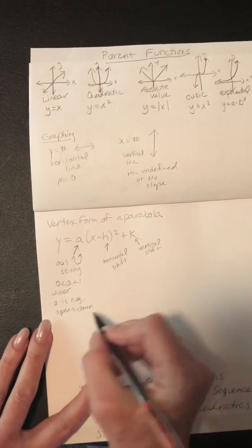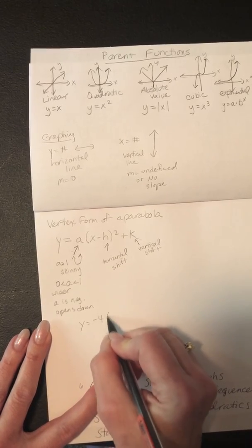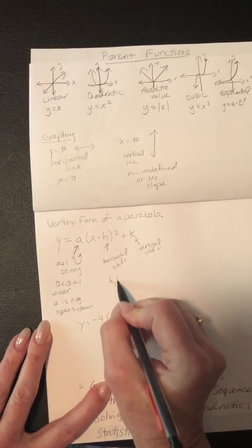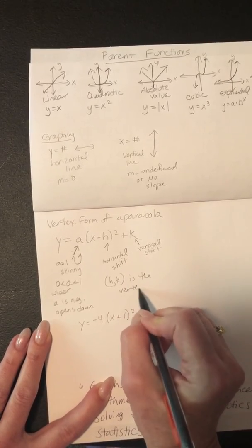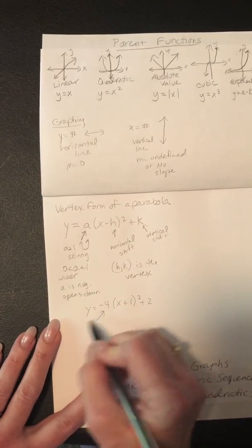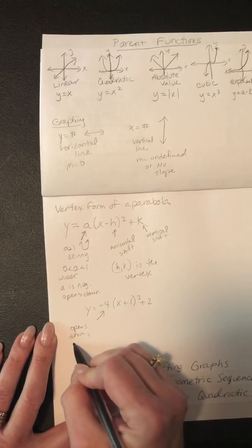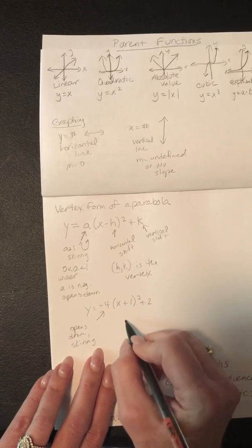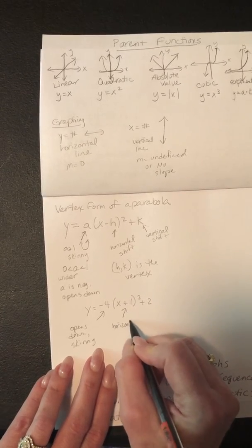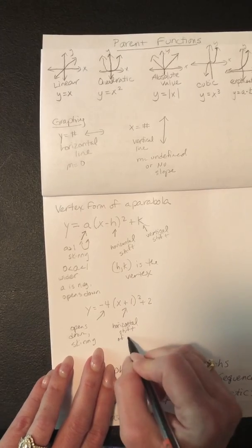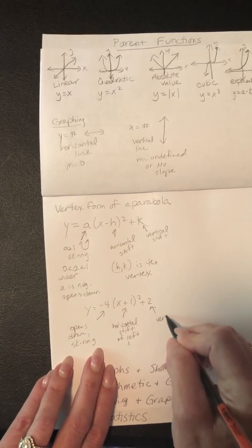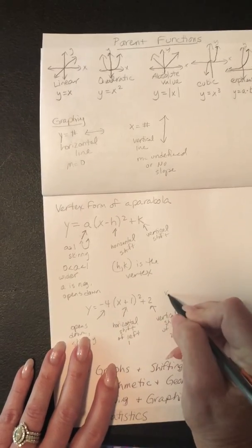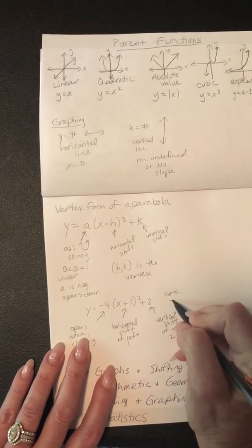And so an example would be like if you had y equals negative 4 times the quantity of x plus 1 squared plus 2. So oh yeah, also h comma k is the vertex. All right, so the negative 4 tells you it's going to open down. It's going to be skinny or a vertical stretch. The horizontal shift is going to be a horizontal shift, a vertical shift of left 1 and then a vertical shift of up 2.